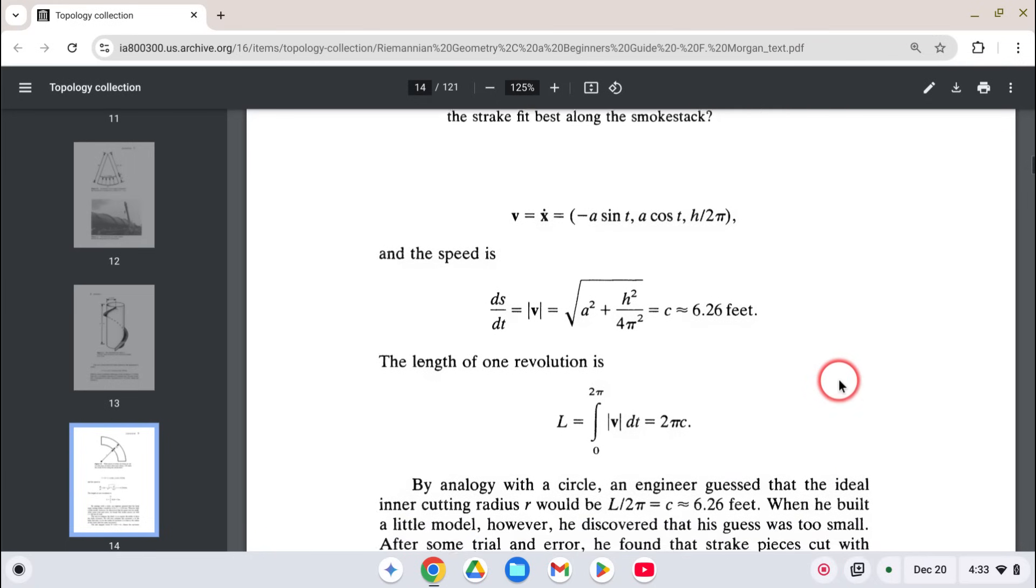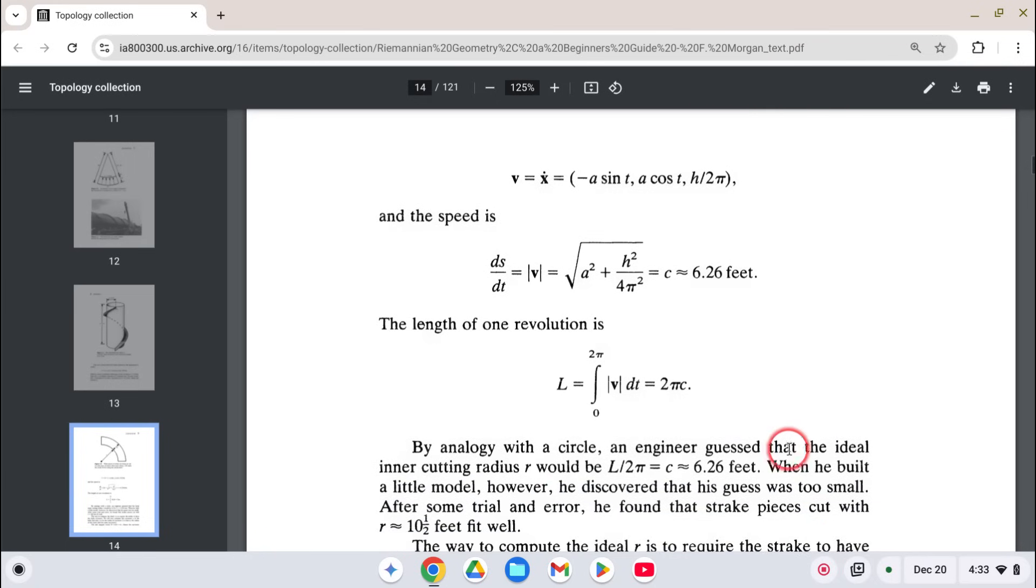Now, here's the interesting part. By analogy with a circle, the engineer guessed that the ideal inner cutting radius would be L equals 2π, which would be about 6.3 feet. Then he built a small model. However, he discovered this guess was too small. After some trial and error, he found that straight pieces cut with a radius of about 10.5 feet fit well.